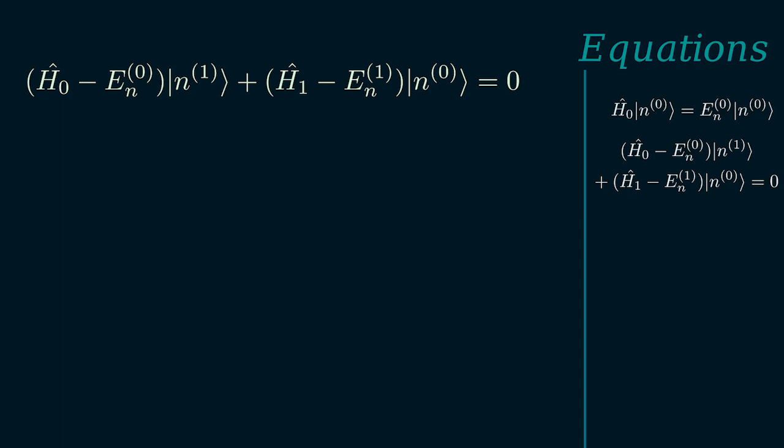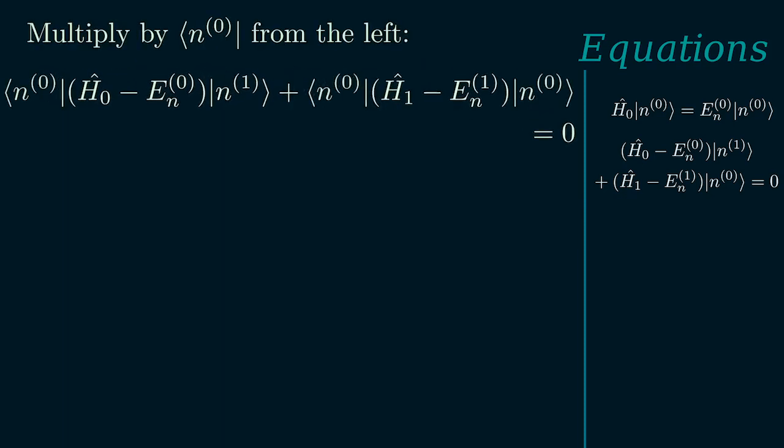Now we'll multiply this with bra n0 from left and obtain the following. Let's try to simplify this. The first term is equal to zero. Can you see why? It's a good exercise to try and figure it out for yourself. So pause the video here and see if you can understand why this must be the case.